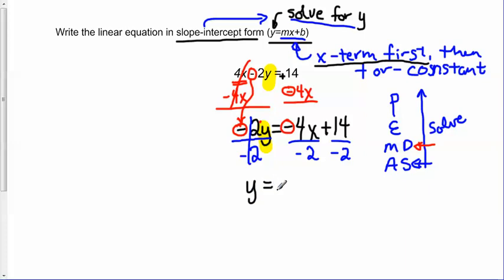Finally, I have my y by itself. y equals, and now we just do our division here. With this negative 4 over negative 2, be careful of your signs. We know a negative divided by a negative is a positive. So positive 4 divided by 2 is 2x. That x is just coming along for the ride. And then positive 14 divided by negative 2 is going to give me negative 7.